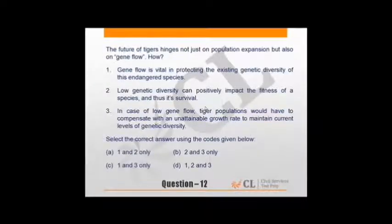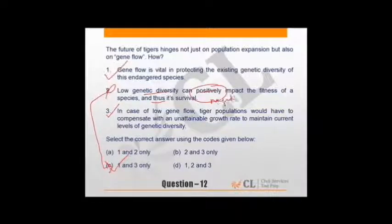The future of tiger hinges not just on population expansion but also on gene flow. Gene flow is vital in protecting genetic diversity of these endangered species. Low genetic diversity can positively impact fitness of a species - we know low genetic diversity means high risk, so it will negatively impact. In case of low gene flow, tiger populations would have to compensate with unattainable growth rate to maintain genetic diversity. Option two is certainly wrong, which gives us answer C. Not difficult - one knows that low genetic diversity is negative impact. Use your sense - General Studies doesn't mean only facts, analytical and logical reasoning can give you answers.